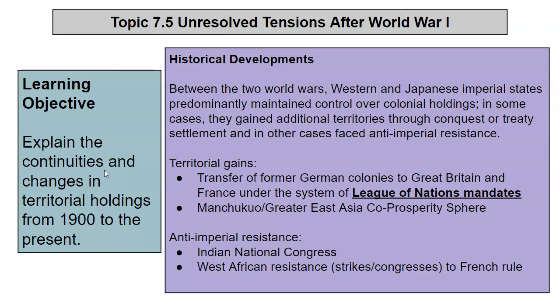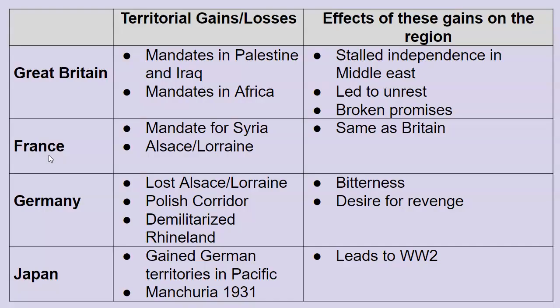Unresolved tensions after World War I — make sure you read through the historical developments. A lot has to do with territorial gain. Great Britain and France basically take over the German colonies and old Ottoman territories. The French get Alsace and Lorraine back. This leads to issues in colonies because they don't get what was promised during the war. Germany loses a ton of land and all its colonies, leading to bitterness and a desire for revenge that creates the climate for Hitler. Japan gains German territories in the Pacific, mostly islands. In 1931 they invade Manchuria in northeastern China for its natural resources. This is really Japan's rise to the point where they decide to conquer East Asia, which leads to World War II.